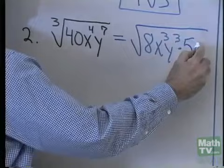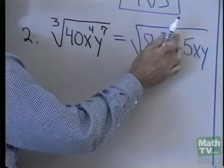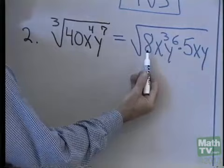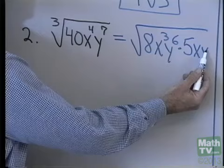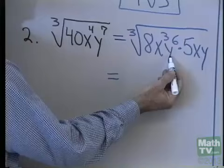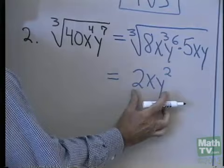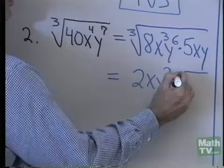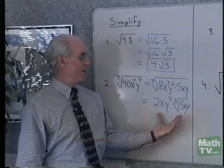The largest perfect cube that divides y to the 7th is actually y to the 6th. So we have 8 times 5 is 40, x cubed times x is x to the 4th, and y to the 6th times y is y to the 7th. I'll separate this into two separate radicals and take the cube root of each one. The cube root of 8x³y⁶ is 2xy², because 2xy² cubed gives that expression. The remaining 5xy stays under the cube root.